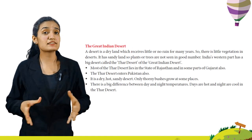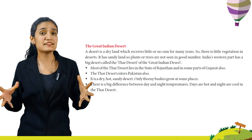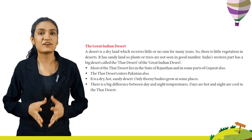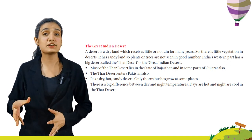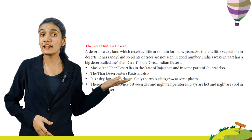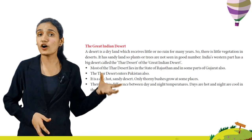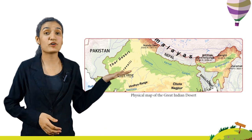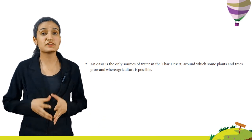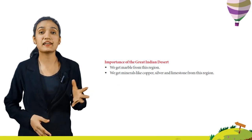A desert is a dry land which receives little or no rain for many years, so there is little vegetation in the desert. India's western part has a big desert called the Thar Desert or the Great Indian Desert. Most of the Thar Desert lies in the state of Rajasthan and some parts of Gujarat. The Thar Desert extends into Pakistan also. It is a dry, hot, sandy desert where only thorny bushes grow at some places. There is a big difference between day and night temperatures — days are hot and nights are cool. An oasis is the only source of water in the Thar Desert, around which some plants and trees grow and where agriculture is possible. We get marble, copper, silver and limestone from this region.